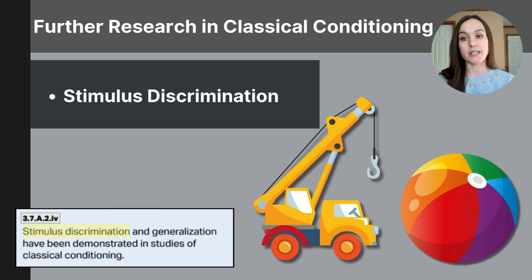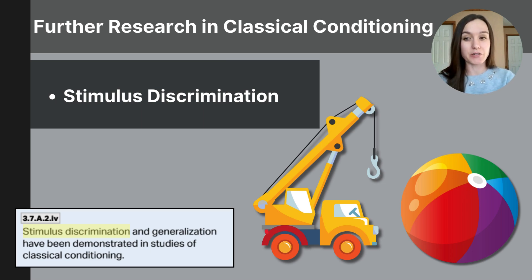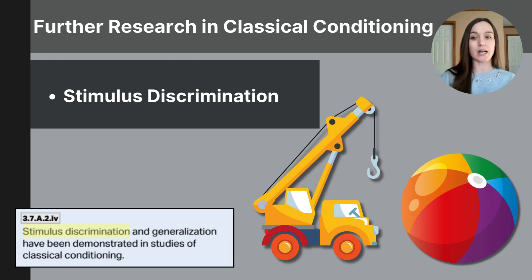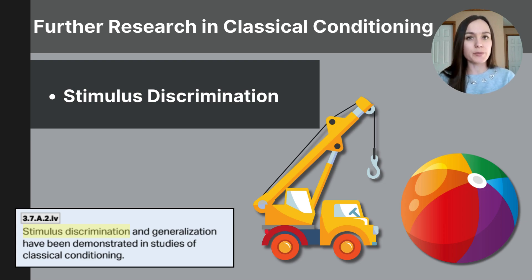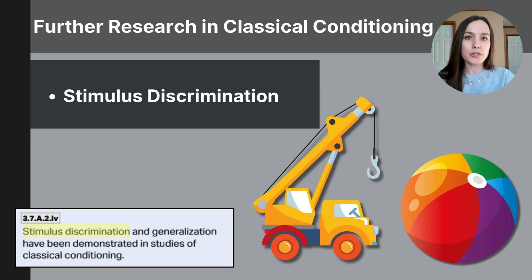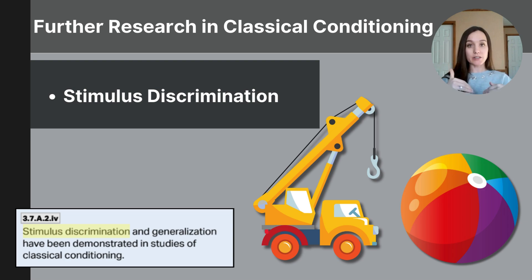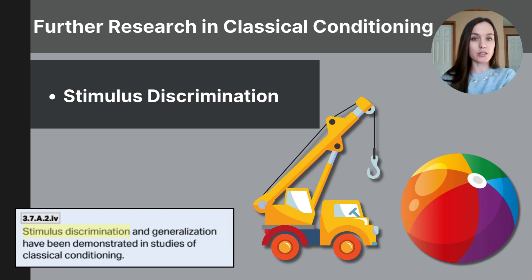Stimulus discrimination is the opposite of stimulus generalization. Had Little Albert been presented with a toy truck and a ball, he likely would have been able to identify that neither are like the rat — they don't share similar characteristics. So Little Albert would likely not show any fear response to these objects. This is stimulus discrimination: the ability to distinguish between the conditioned stimulus and other objects not associated with it. Note that stimulus generalization and stimulus discrimination will come up again in operant conditioning.